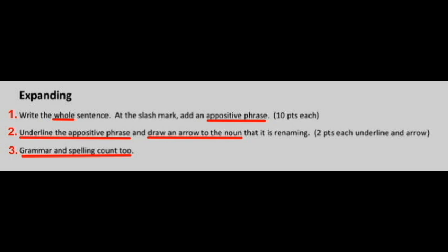Now let's look at the last page — expanding — and this is the actual assignment where you're going to be writing some appositive phrases yourself. Number one: write the whole sentence and at the slash mark add an appositive phrase. It's worth ten points, so if you don't write the whole sentence and just write the slash mark part, you'll get points off. Number two: underline the appositive phrase in the whole sentence, then draw an arrow from the appositive phrase to the noun it's renaming — that's worth two points each, so four points total.